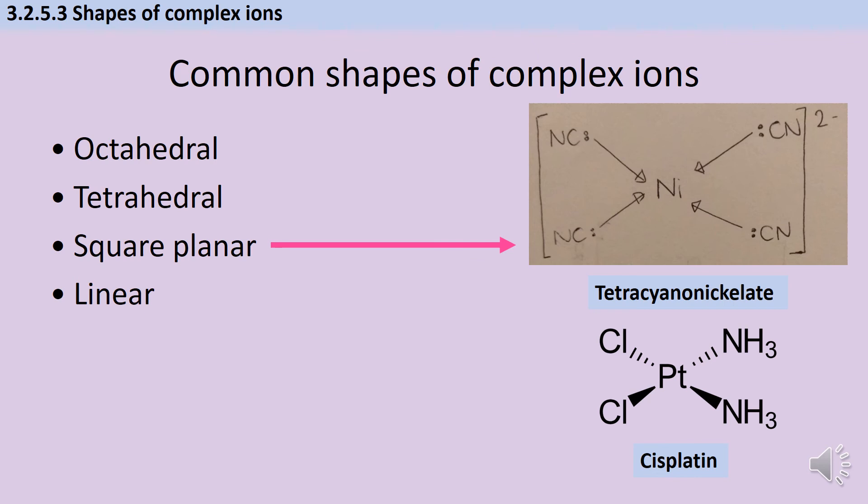But this tends to be limited to examples where the central ion is either silver or nickel. There is one other example, however, and it's a named example that there's a lot more detail about elsewhere in the spec, and this is called cisplatin.